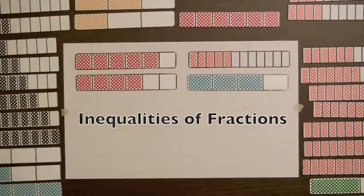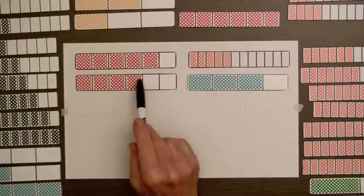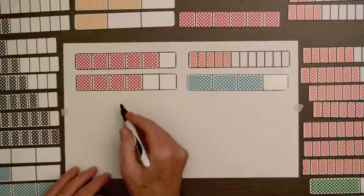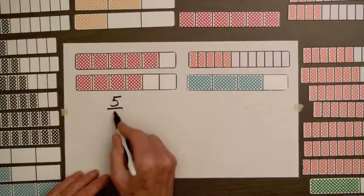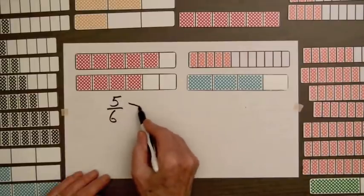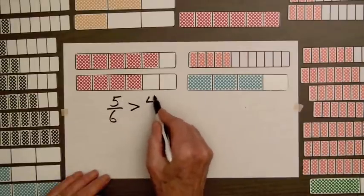Let's look at some inequalities of fractions. The top bar has more shading than the bottom bar, so we've got five parts out of six, so we have five-sixths is greater than four-sixths.